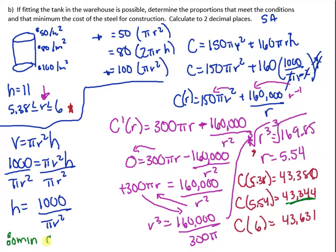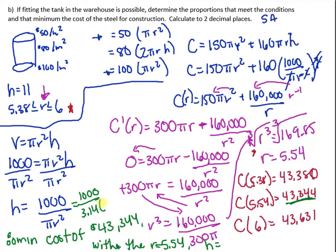So therefore, minimum cost of $43,344 with the radius of 5.54 meters and the height of, go back to this height right here, 1,000 divided by 3.14 times 5.54 squared.